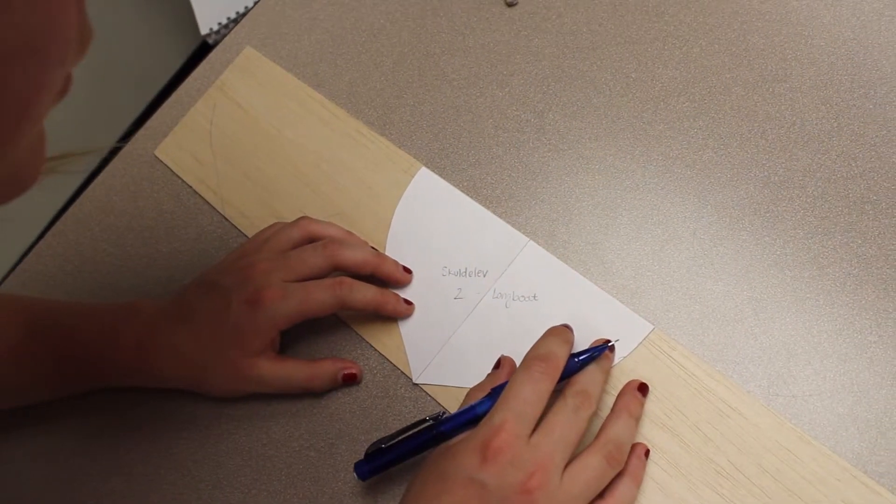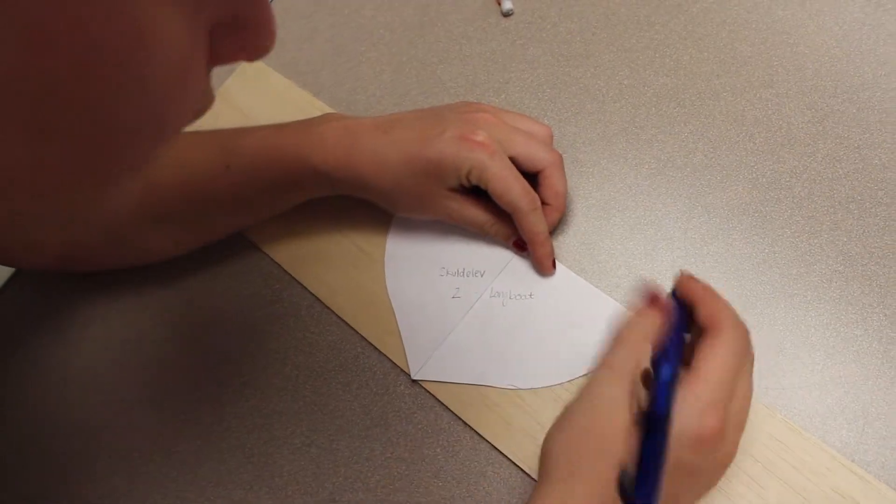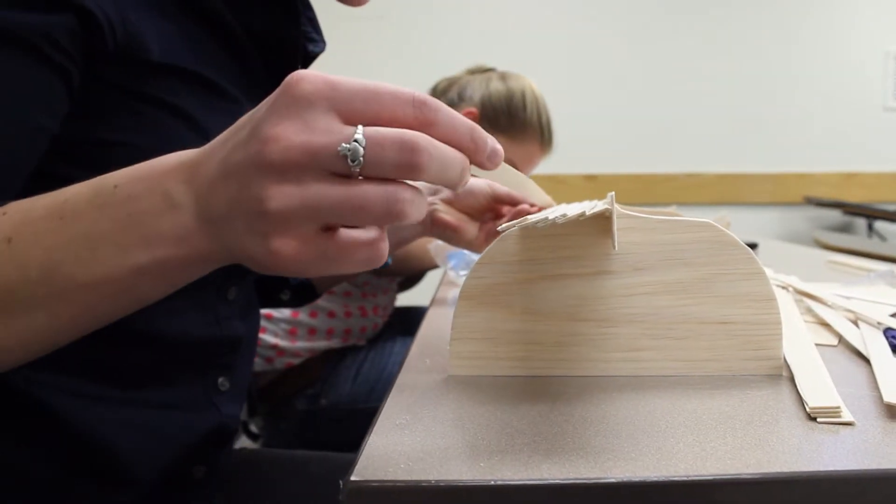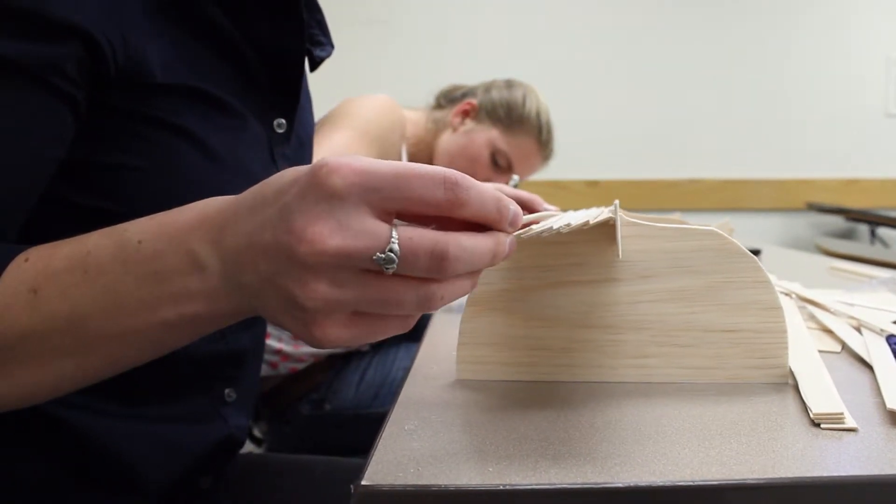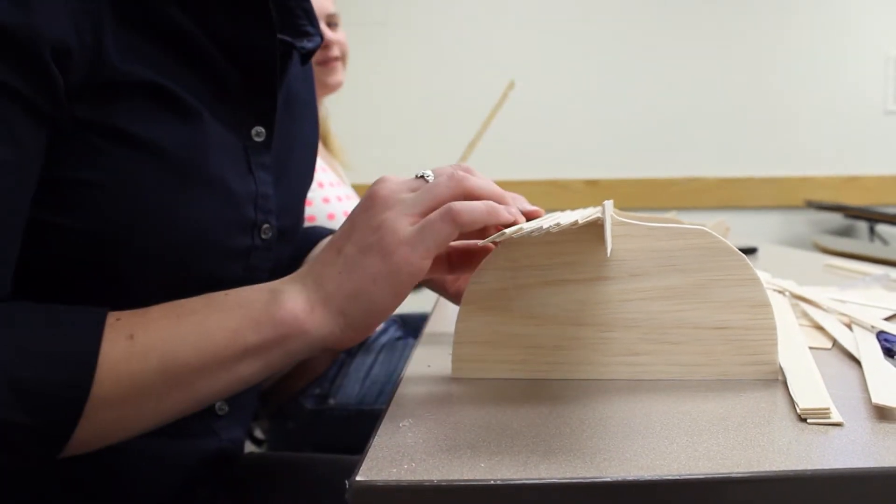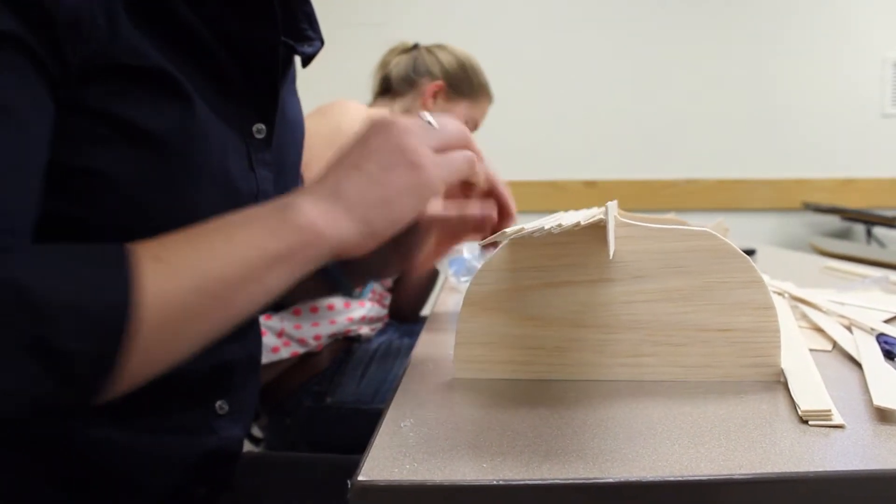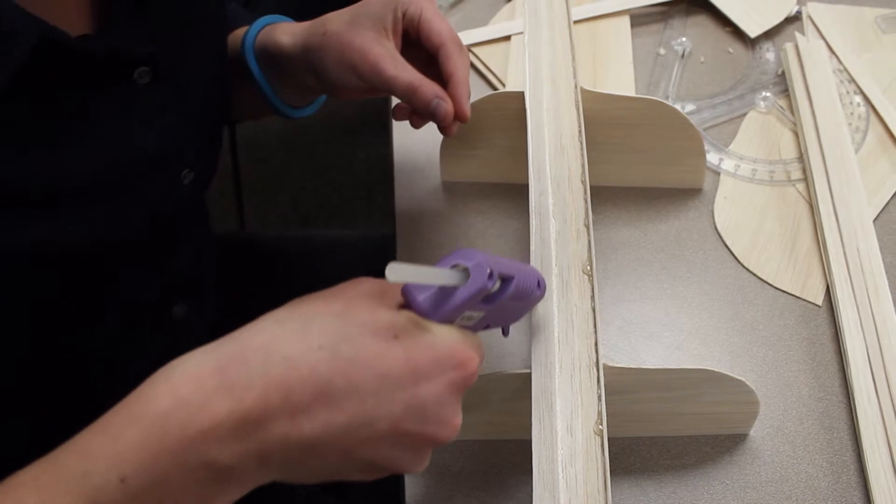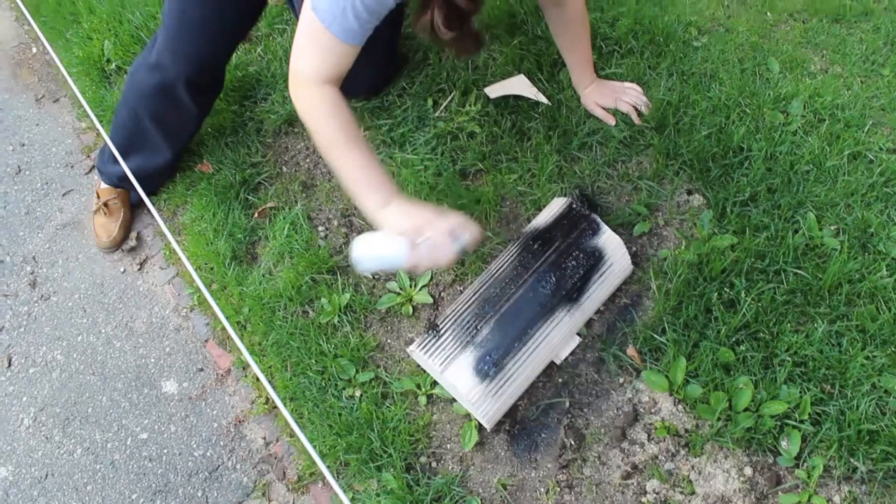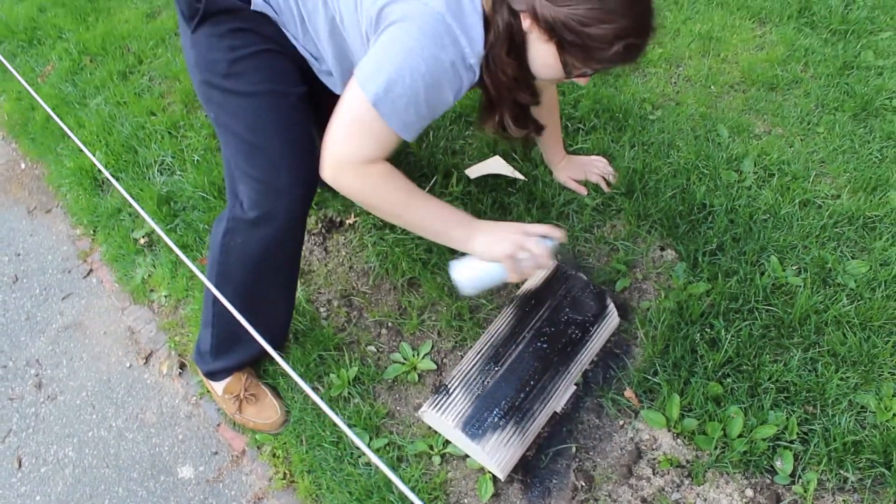After cutting out our hull shapes based on the drawings in Crumlin Peterson's book, we took long strips of balsa wood and constructed the boats in traditional clinker style by building from the keel up and overlapping the strips. We used hot glue to join the various pieces together, and then sprayed the boats with rubber-based sealant in order to waterproof them.